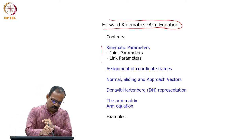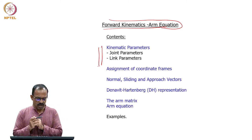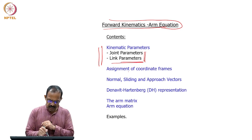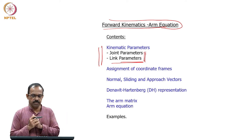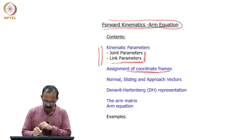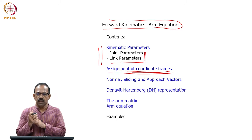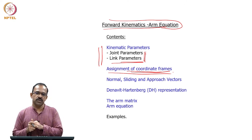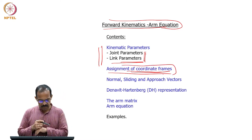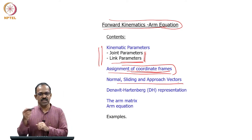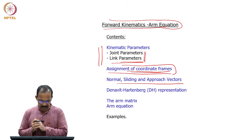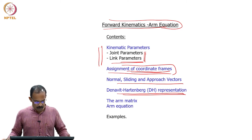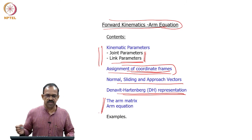In previous classes we discussed basic coordinate transformation and how transformation matrices represent the position and orientation of one coordinate frame with respect to another. Now we need to apply those principles to robots and see how kinematic relationships can be developed. Here we will discuss kinematic parameters — joint parameters and link parameters — then coordinate frame assignment, normal/sliding/approach vectors, and finally the Denavit-Hartenberg representation for robots, followed by the arm equations.